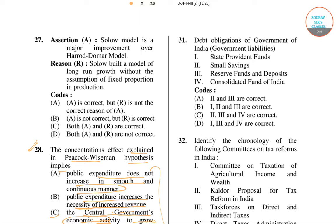In question number 31, the debt obligations of the Government of India are given. Four options are given. The right answer is option B — state provident fund, small savings, and reserve fund and deposits. Debt obligations of the Government of India include state provident funds, small savings, reserve funds, and deposits. For question number 31, the right answer is option B.